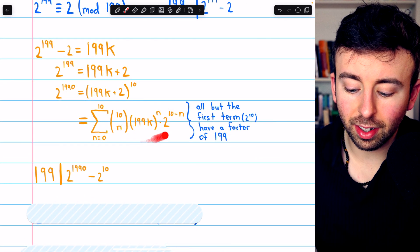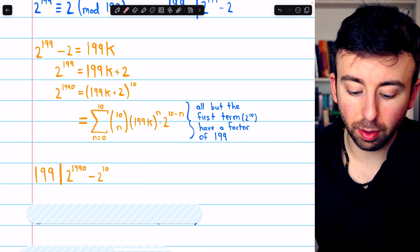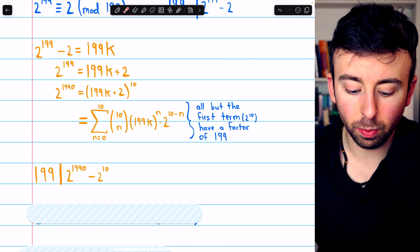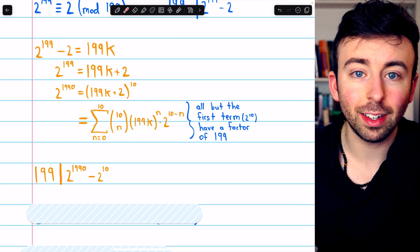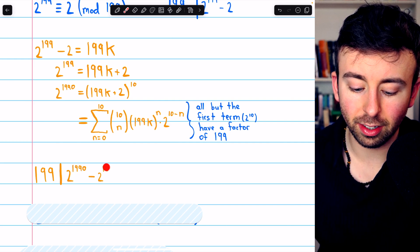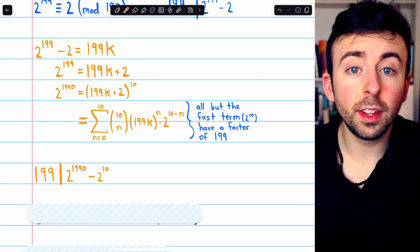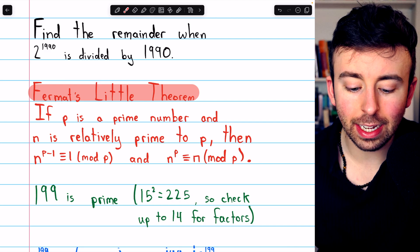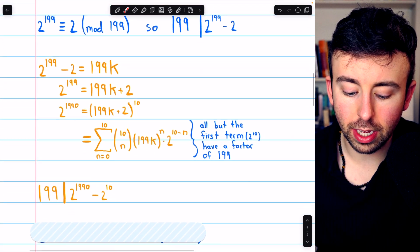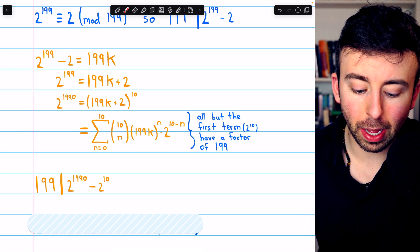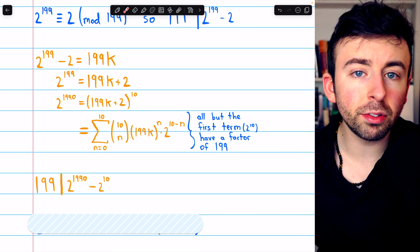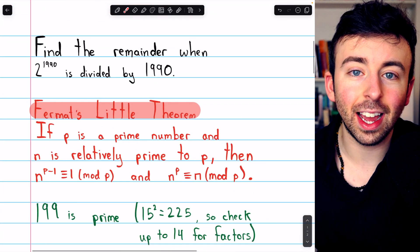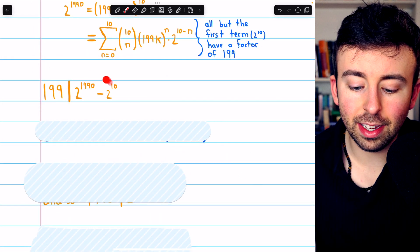Again, that's because all terms except the first one have a factor of 199. So if we just subtract that first term over to the left side of the equation, the right side all contains factors of 199, and so 199 must divide both sides of the equation since they're equal. So 2 to the 1990 minus 2 to the 10, that is certainly divisible by 199. This is very useful because remember, the question is about a remainder after dividing by 1,990. We've just shown that 2 to the 1990 minus 2 to the 10 is perfectly divisible by 199. So now we just have to show that it's also divisible by 10, and then we'll know that this difference is in fact divisible by this important number, 1,990.